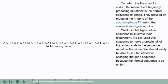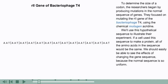To determine the size of a codon, the researchers began by producing mutations in the normal sequence of genes. They focused on mutating the R2 gene of the bacteriophage T4, using the chemical mutagen acridine. We'll use this hypothetical sequence to illustrate their experiment.